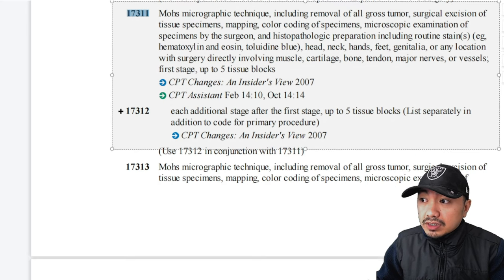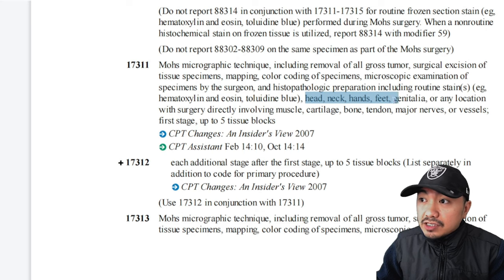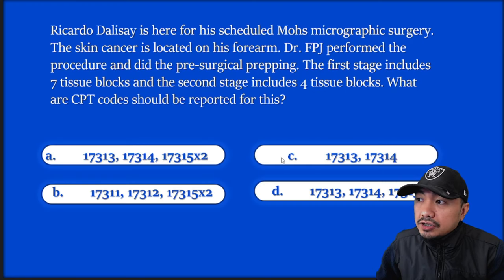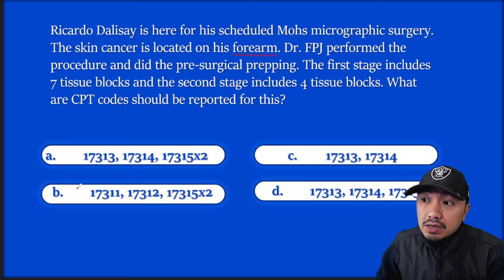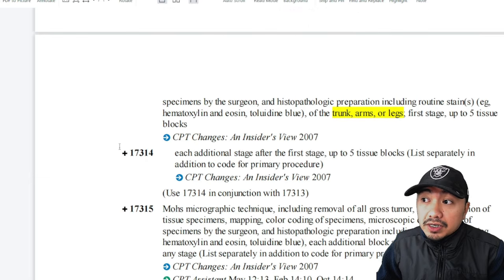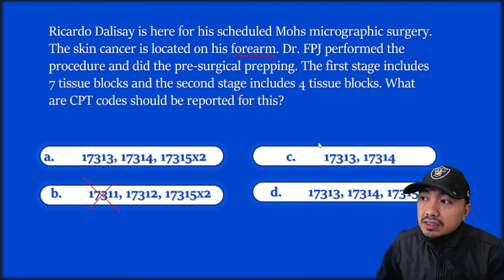Code 17311 is for head, neck, hands, feet, and genitalia — first stage. Code 17313 covers trunks, arms, or legs — first stage. Since the cancer is on the forearm, you use 17313. Eliminate any answer choices referencing 17311. For each additional stage beyond the first, code 17314 as an add-on code. Since the doctor performed two stages, you will code 17314 for the second stage.